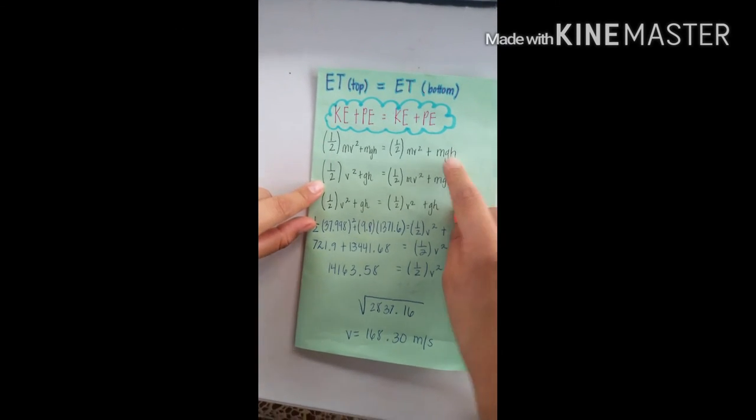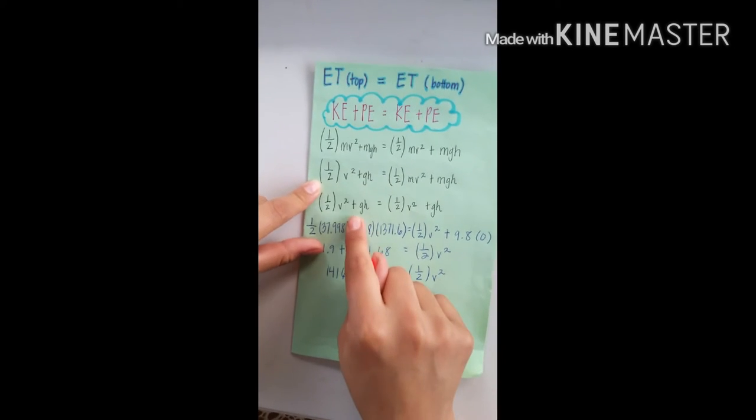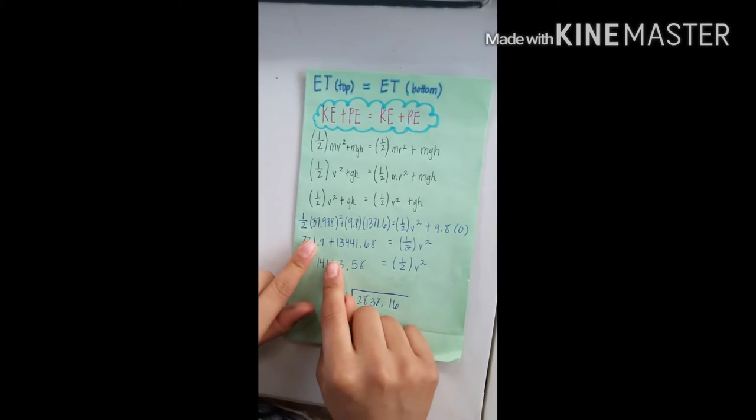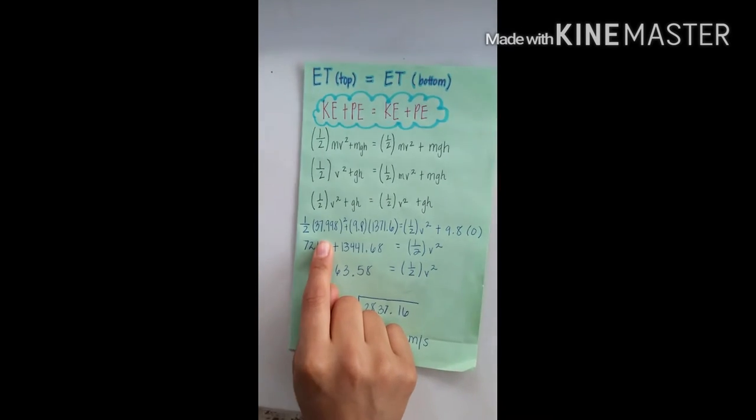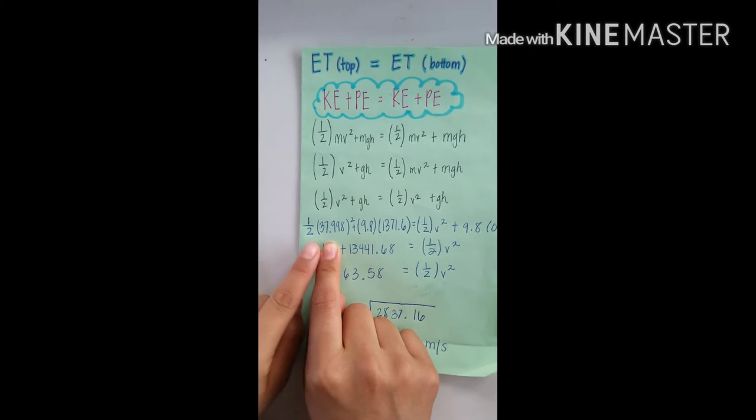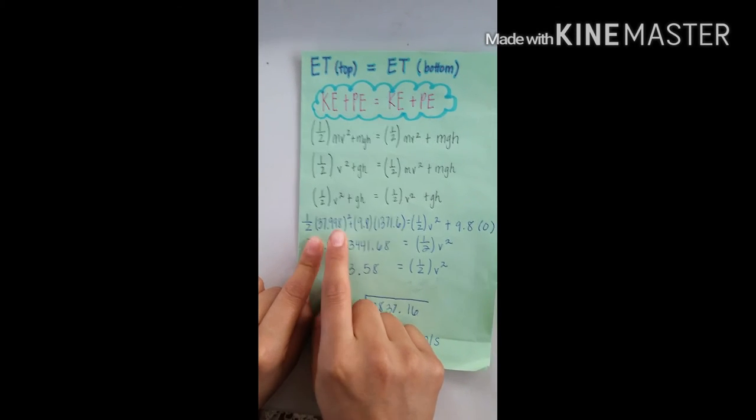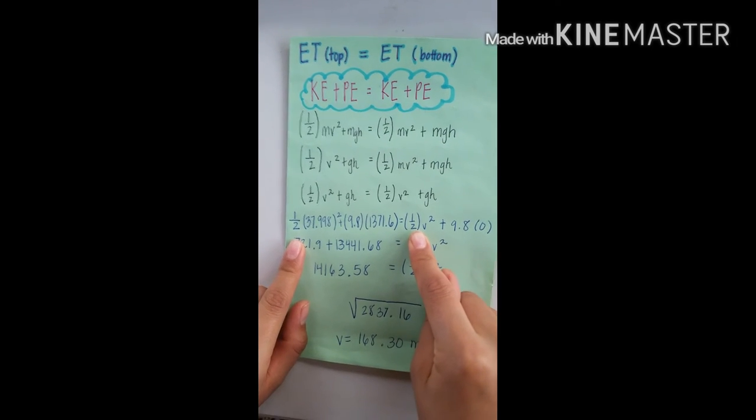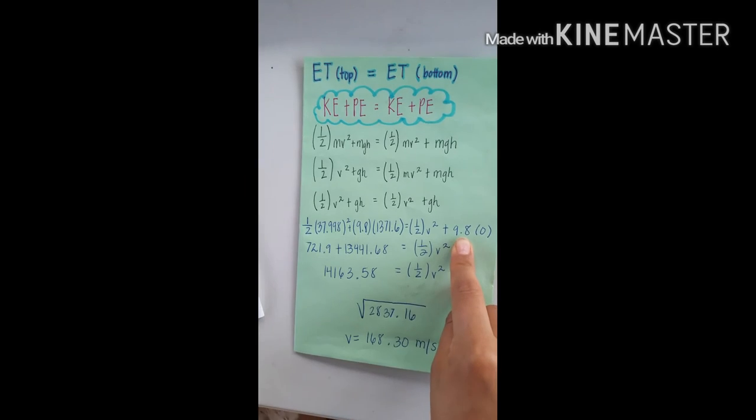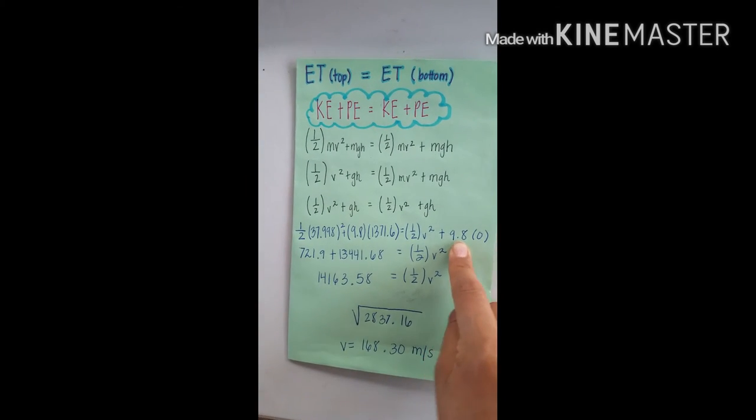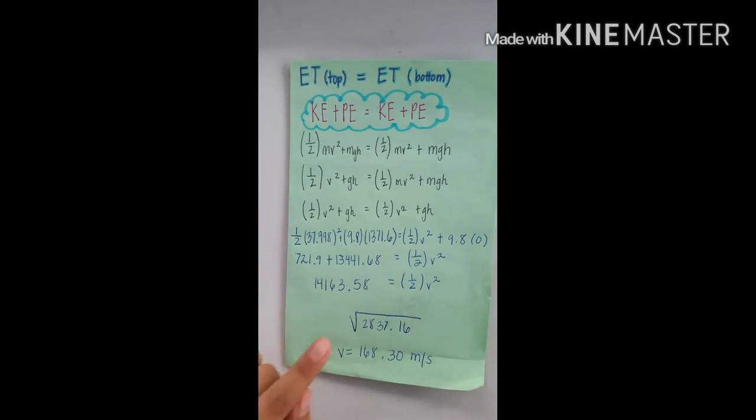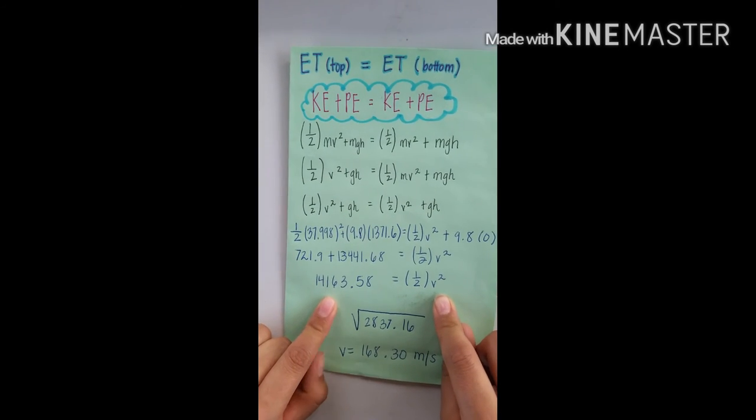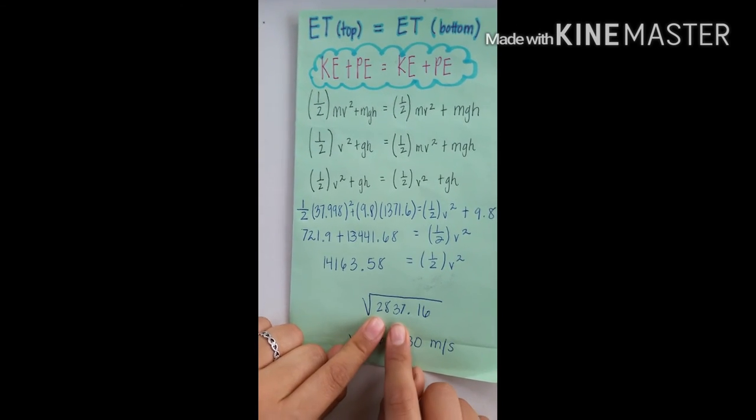We go down and we cancel out all the M's, all the masses. We come down here and we cancel out the M's, the masses to both. And we plug in our numbers. Velocity is this one. And gravity and height as well. And this is for our kinetic energy. And gravity for this one. We add these together and we get this number right here equals to half a V square. We square root it and we get this number.